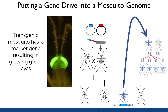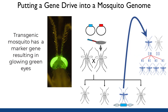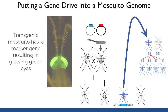Subsequent mating of that gene-drive containing mosquito will then result in a line of mosquitoes with the gene drive, which can then be researched and evaluated. This process in mosquitoes, from injection to a transgenic line, will take a couple of months, if all goes well.